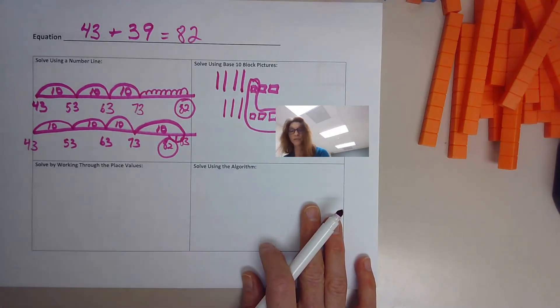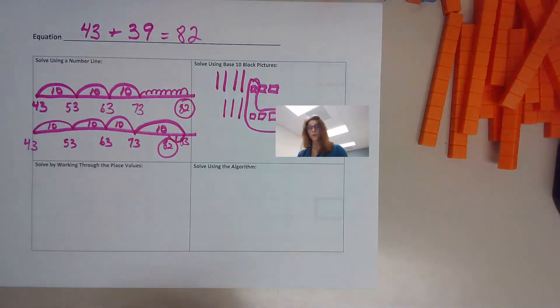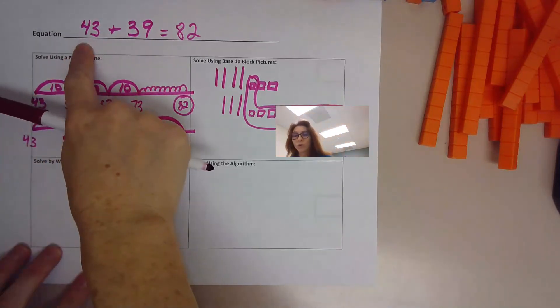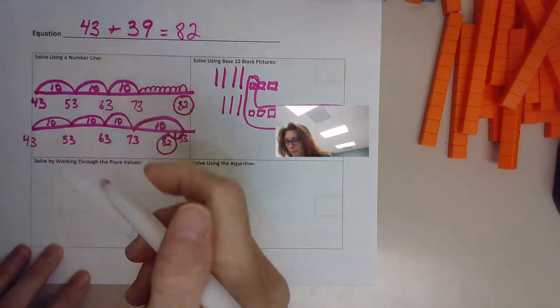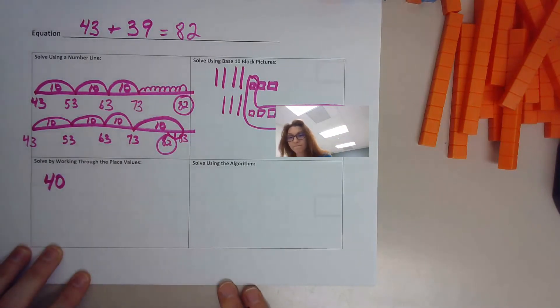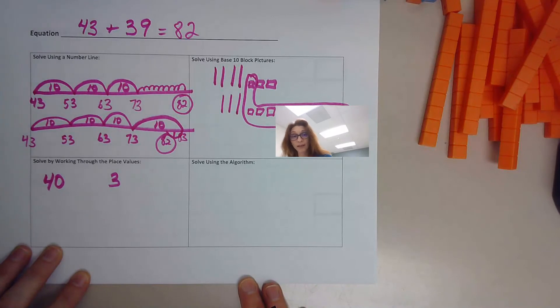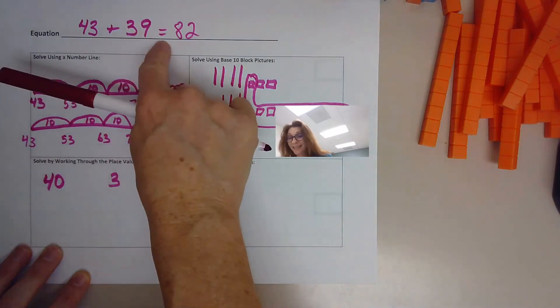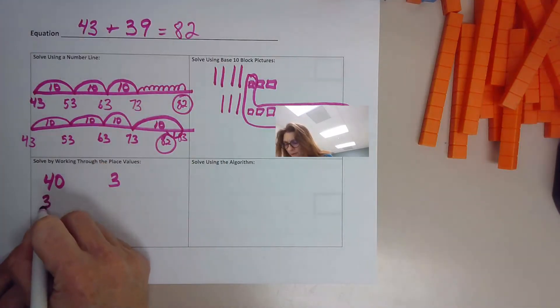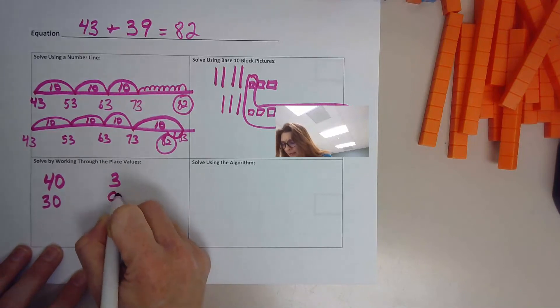Solve by working through the place values. Okay. So we're going to use our numbers. We're going to put them into expanded form like we did on the first page. And then we're going to use that expanded form to make it really easy to add. So 43 is 40 and 3. Okay.